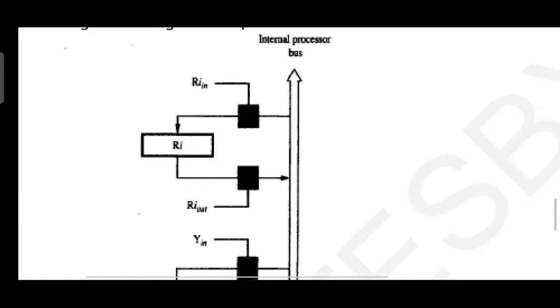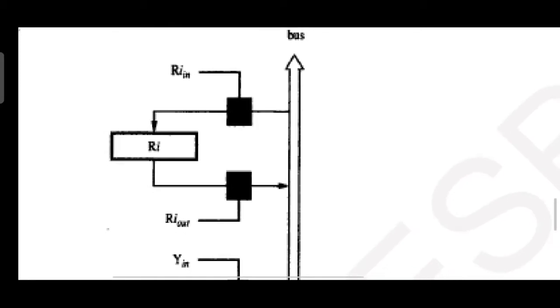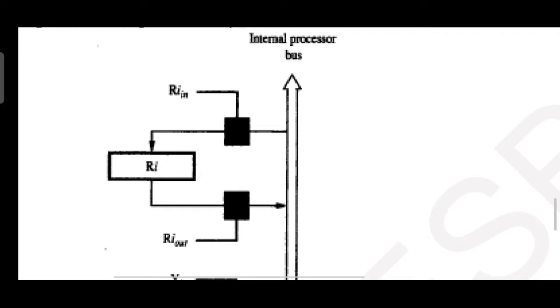RI which has got two switches. One is input switch and other one is output switch. So RI in. If input switch is activated, you can see the bidirectional arrow. Bidirectional arrow in the sense, RI is taking the input from internal processor bus via a switch. If the switch is activated then RI can access the data from the internal processor bus. What is a switch? Switch establishes the circuit.